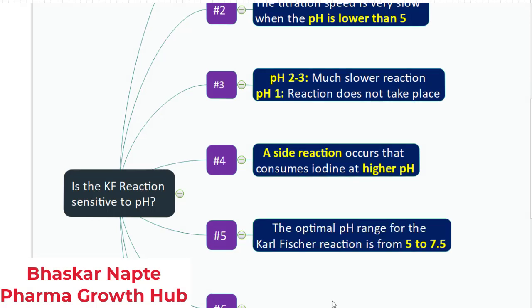So what is the preferred pH range for the KF titration? It should be between 5 to 7.5. In this range, the reaction rate is very good. If it is lower than 5 or higher than 7.5 or 8, you will have the challenges as discussed above.